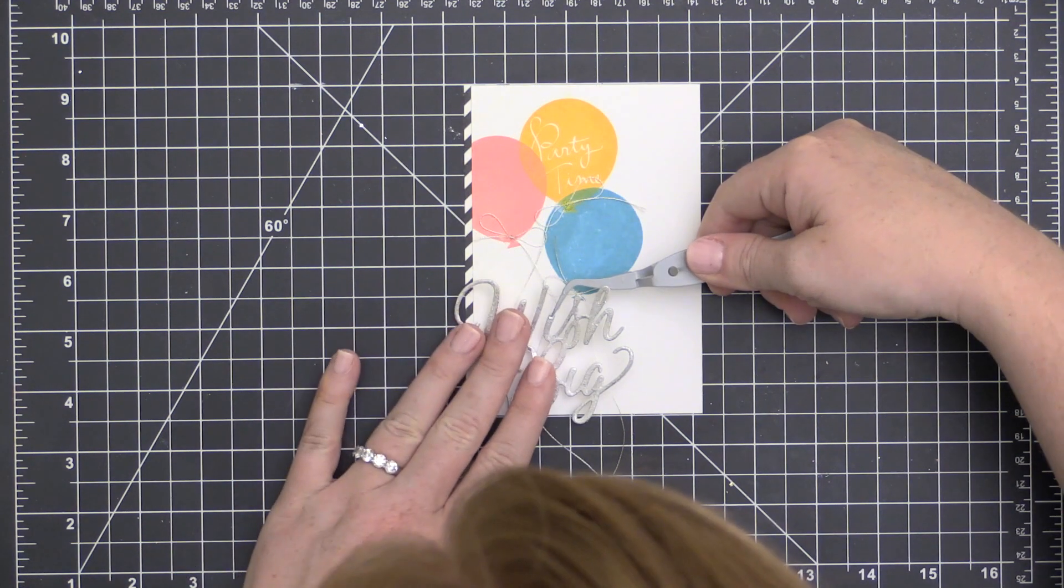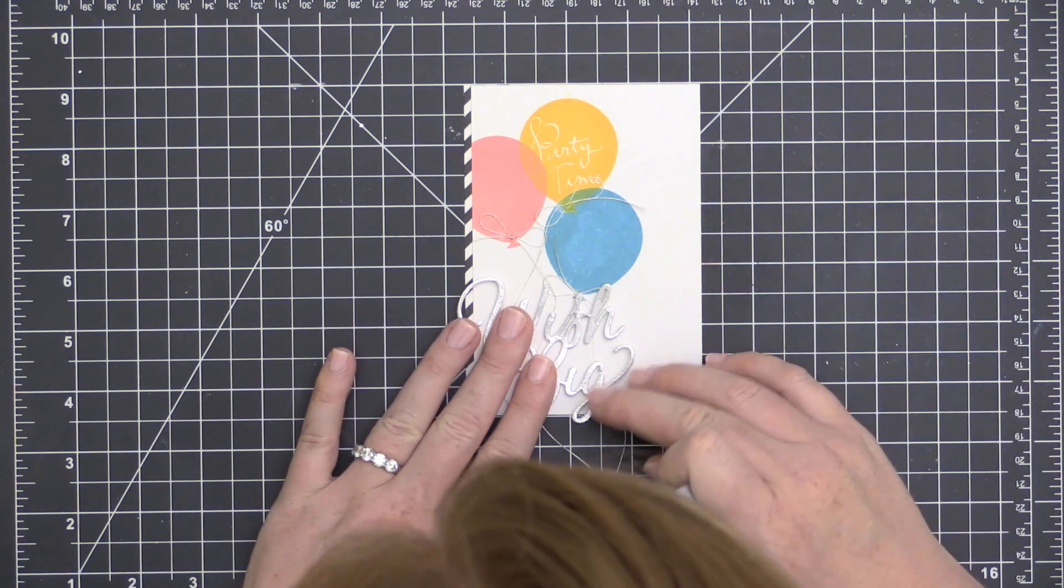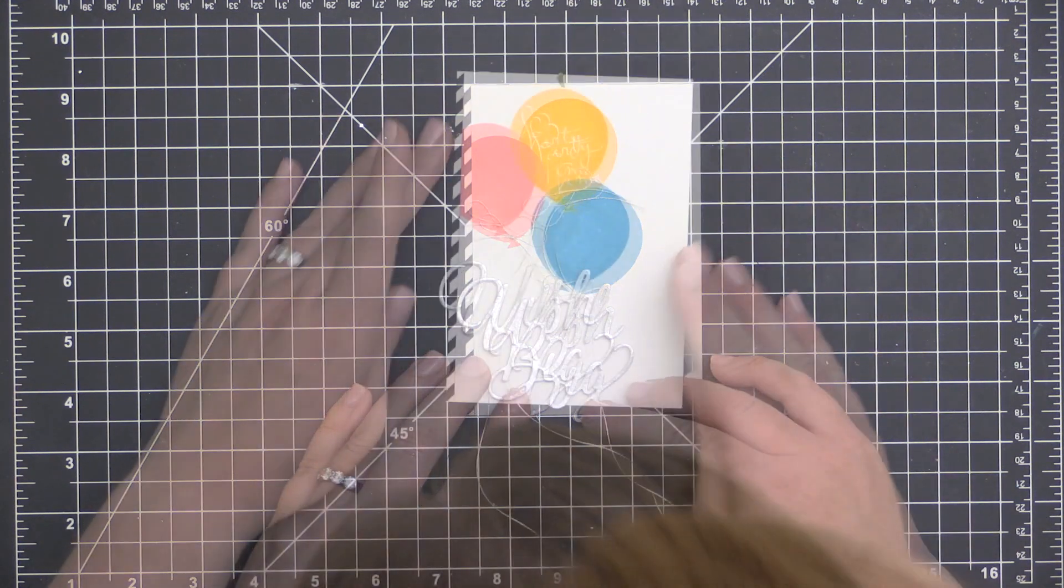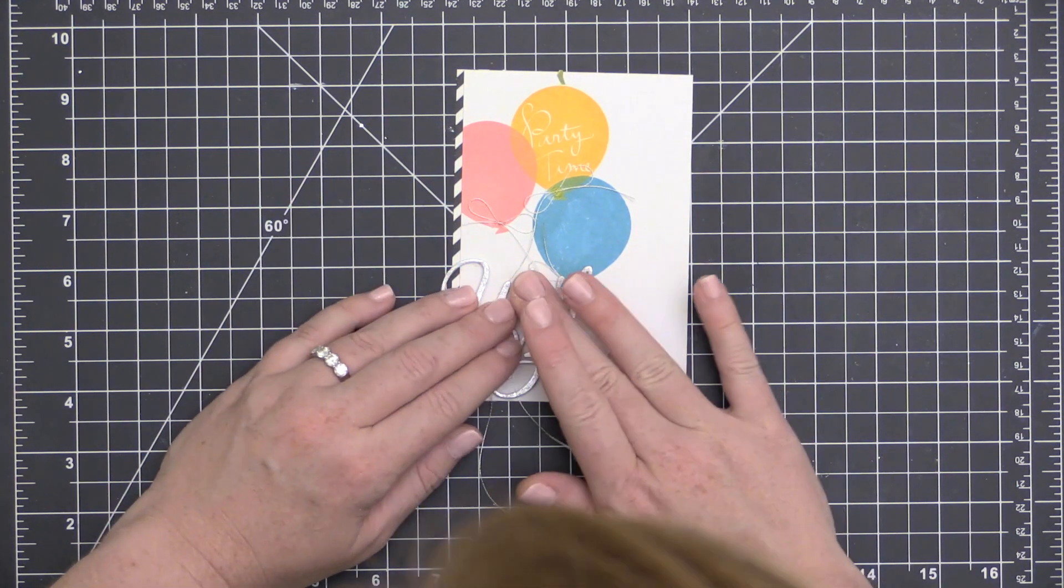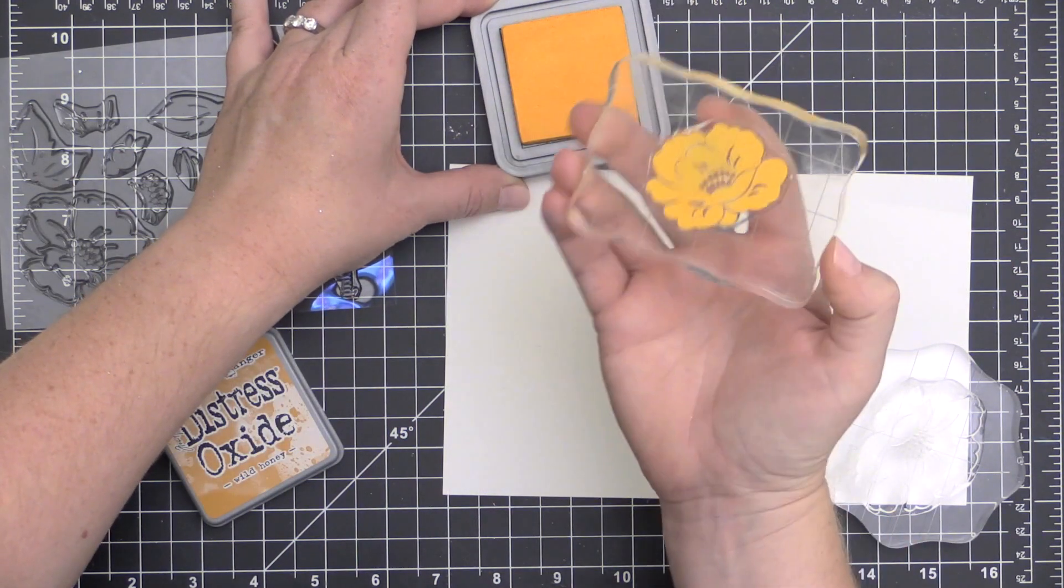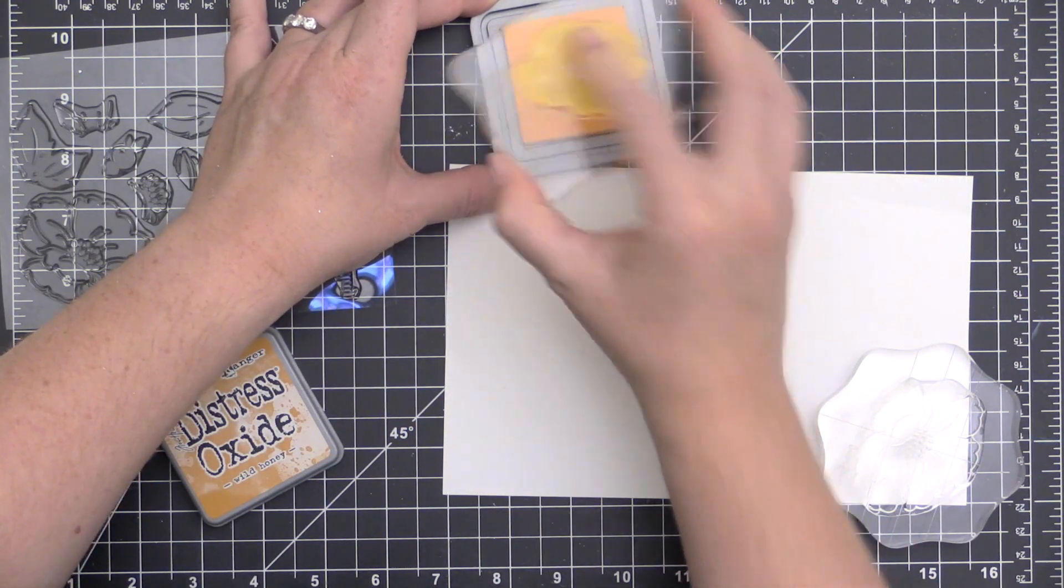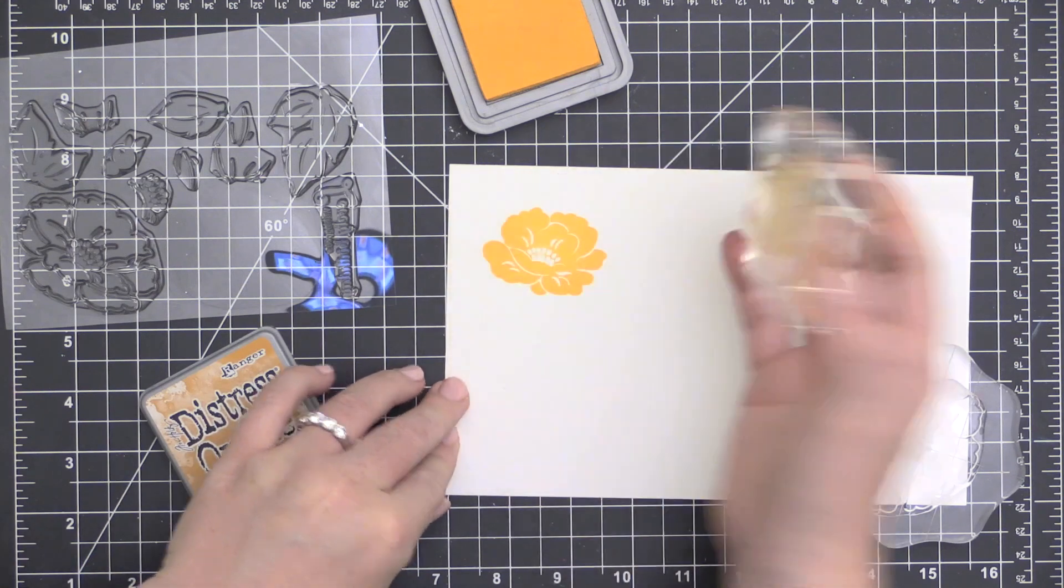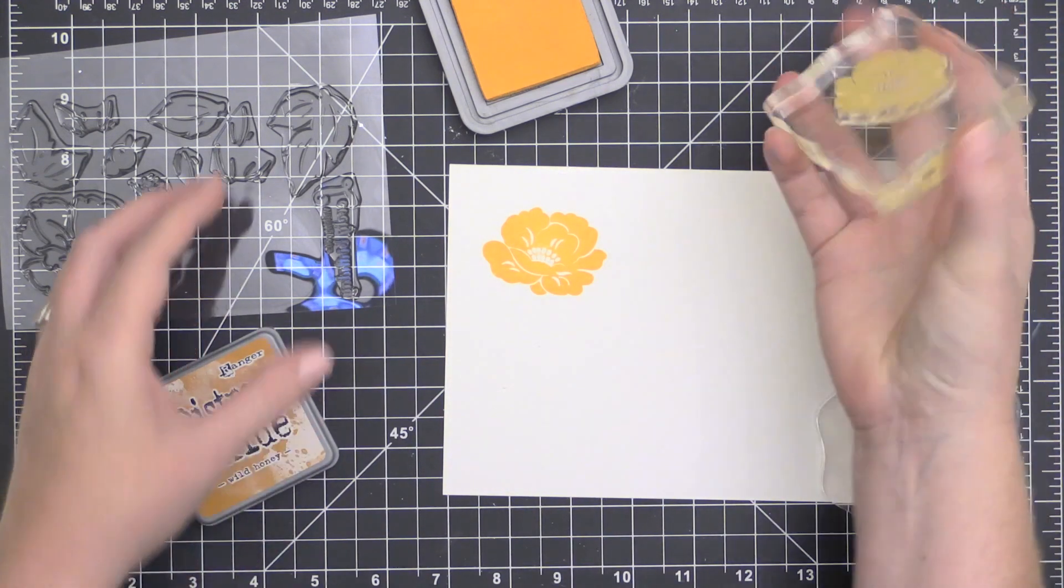So I set that aside and let it dry. And now I'm adding some more of that Ranger multi-medium on the back of my die-cut sentiment there. And you can see I also added a little bit of black and white striped pattern paper along the side. To finish that up, I just used an aqua card base and I adhered that stamped panel onto the front using some foam adhesive.